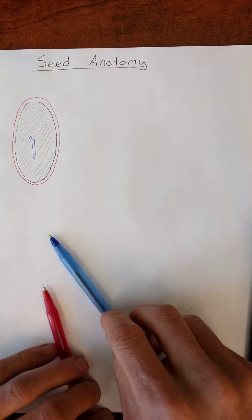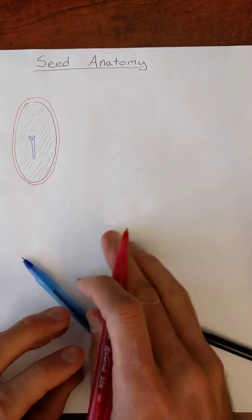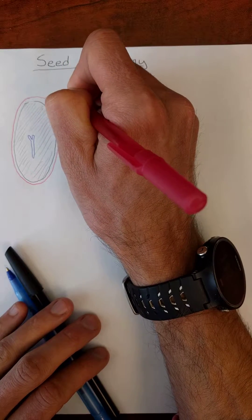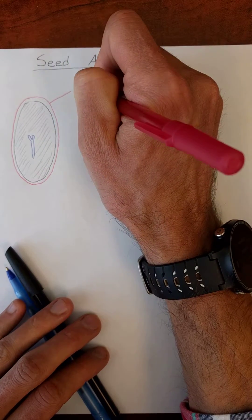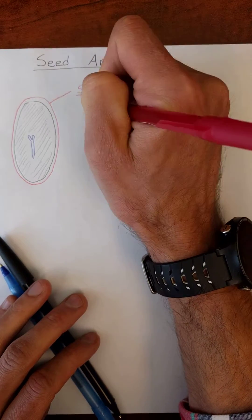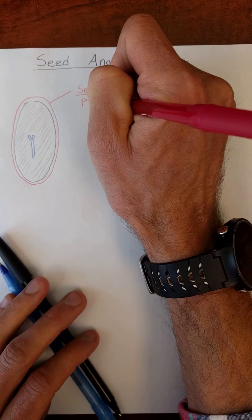Now, let's give these some names. The red that I've drawn here, that outer layer, is for protection, and it's called the seed coat. For protection.